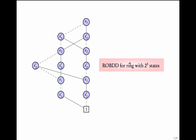How many nodes does it have? If it has 2^3 states it means we have used 3 bits and for each bit we have 2 variables. So there are at least 6 rows and in each row there are at most 3 nodes. So it has less than 2 × 3 × 3 nodes, where 2 is because of the primed and unprimed variables and 3 is for the width. So far we have not seen any spectacular gain.